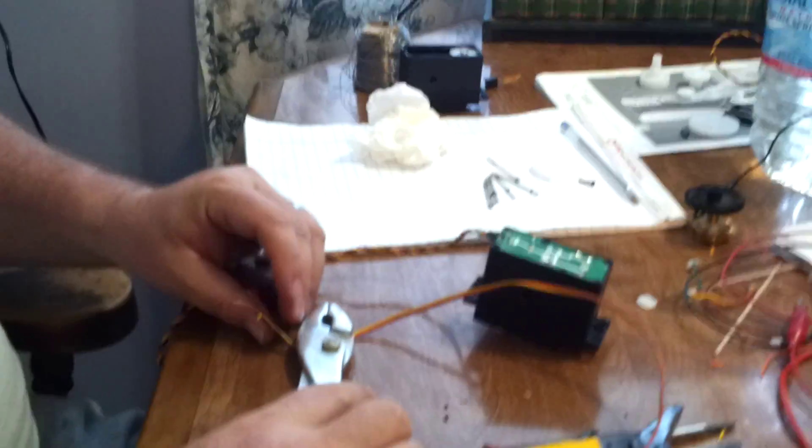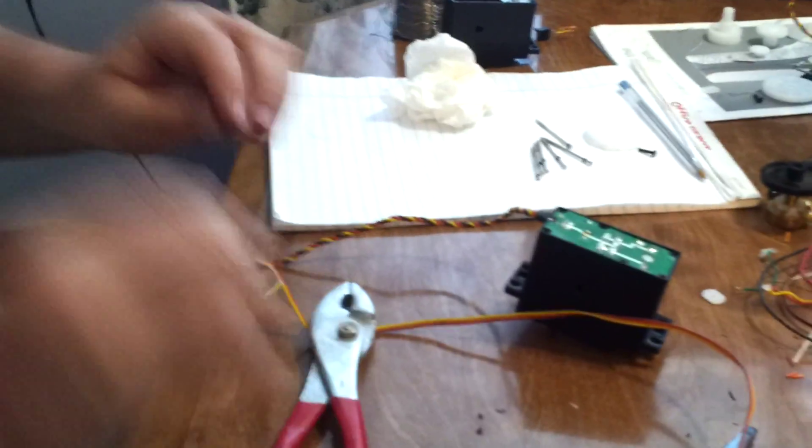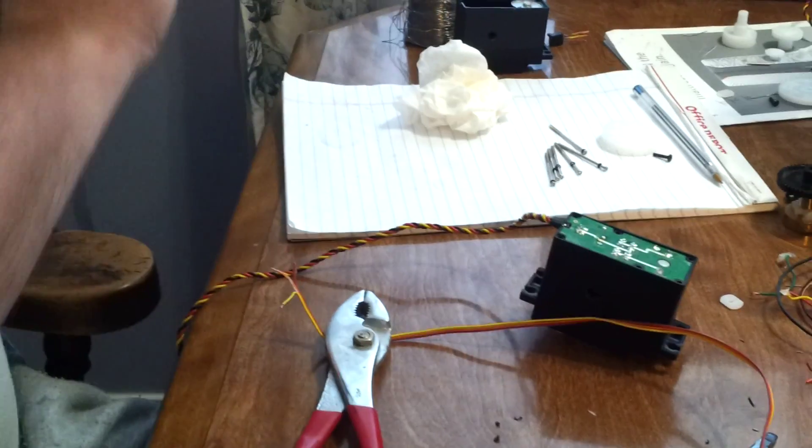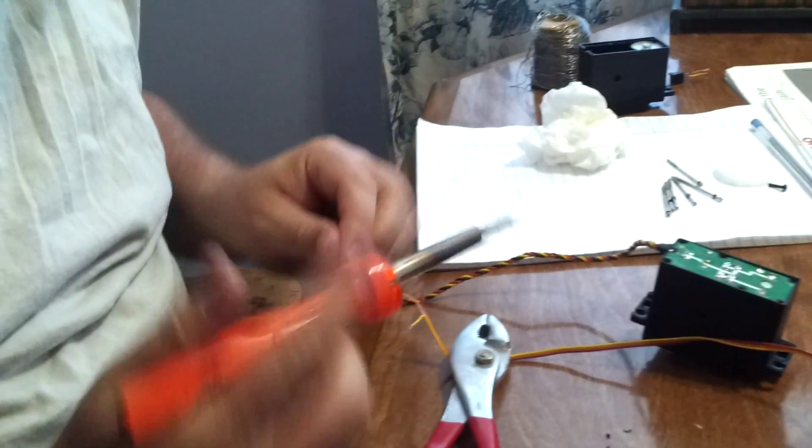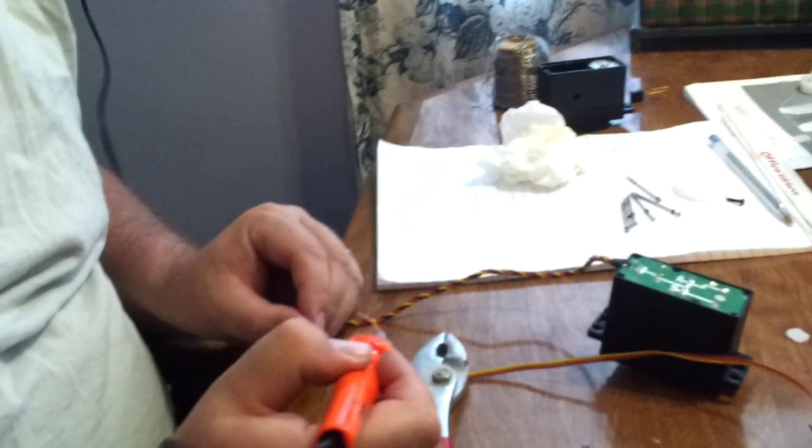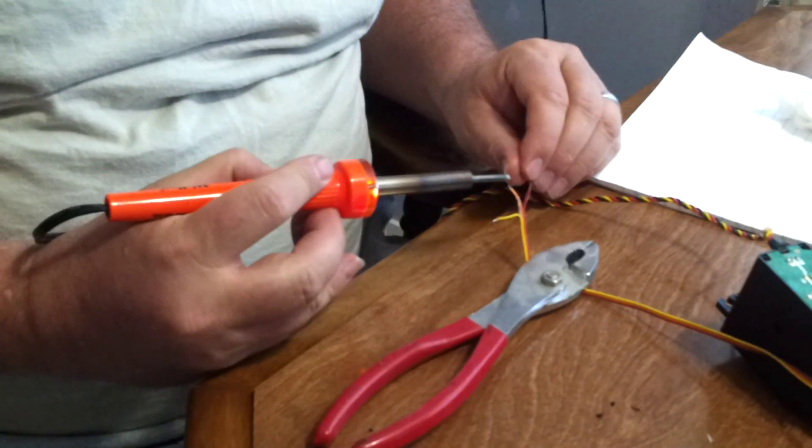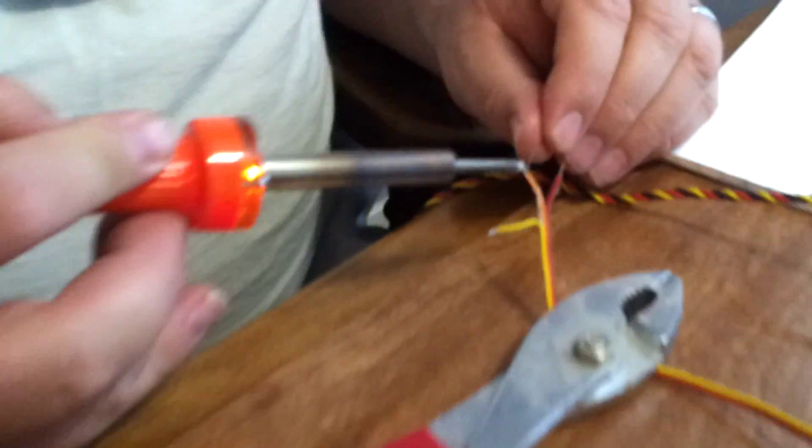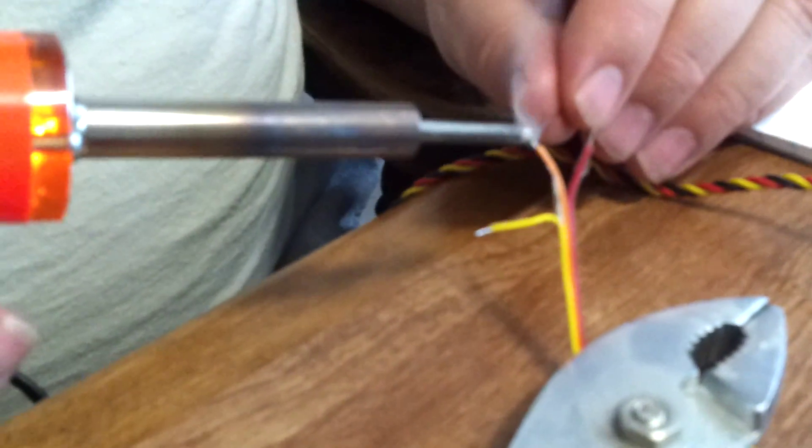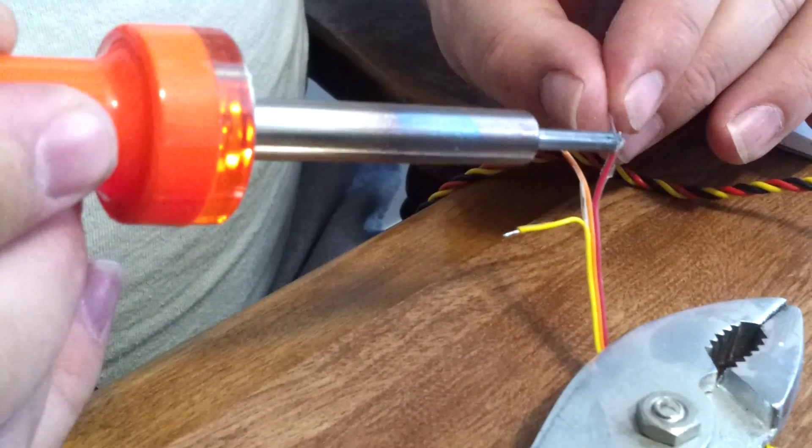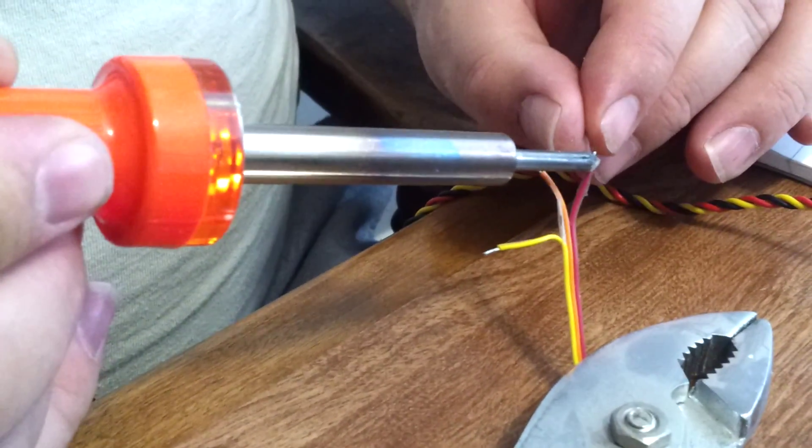Now we're going to tin the wires, and you tin the wires by basically putting a little bit of solder on. This helps hold the wires, keeps them from fraying, it also makes it a lot easier when you go to solder on.